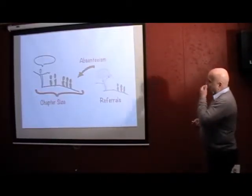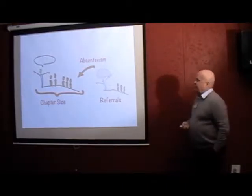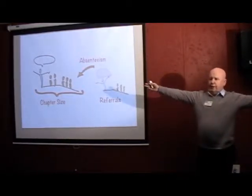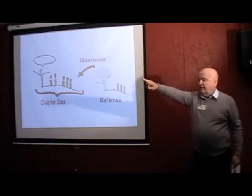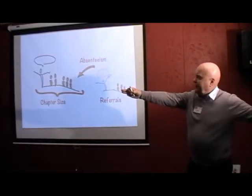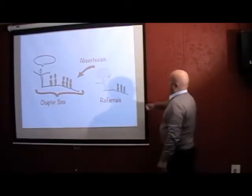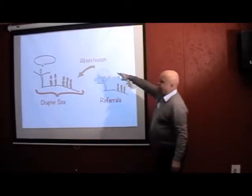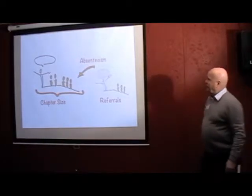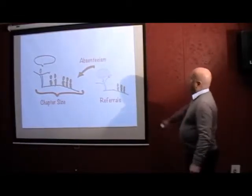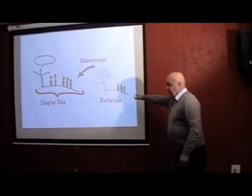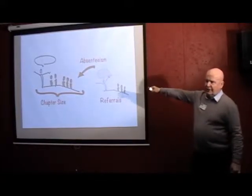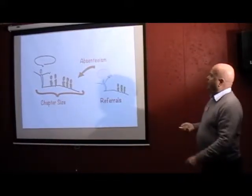So, the first three key performance indicators are the number of people in the chapter. I'll come back to that, but Siddhash referred to it. The number of people in the network, less the number of people who don't attend meetings, one-to-ones, or whatever. So that's a negative. And then thirdly, the referrals you pass between the network.